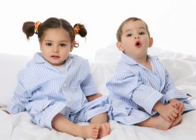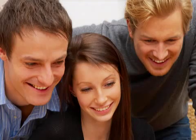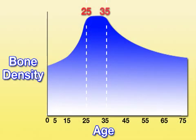Bone density grows during childhood and adolescence, reaching its peak mass around age 25. At this point, density remains steady for about 10 years. After age 35, bone density will gradually drop at the rate of 0.3 to 0.5% each year. This is a normal part of the aging process, and not the same as osteoporosis.